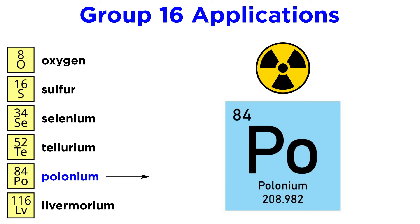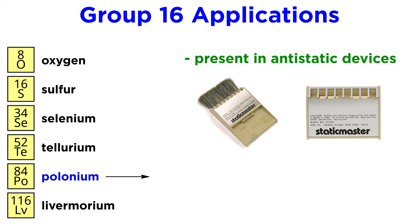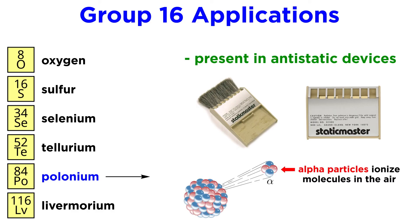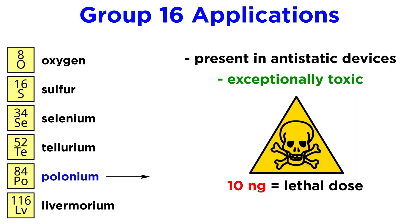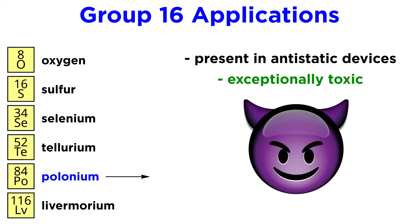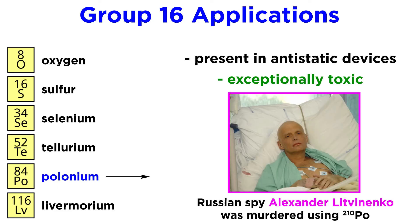Polonium, as radioactive as it is, actually also has some applications. It is present in antistatic devices, where a tiny amount will produce alpha radiation that ionizes molecules in the air. These ions carry electricity and allow static to discharge. However, it is exceptionally toxic, with 10 nanograms being a lethal dose, so applications are limited, except for those with diabolical intentions. The murder of former Russian spy Alexander Litvinenko was carried out with polonium-210, most likely produced in Russia.